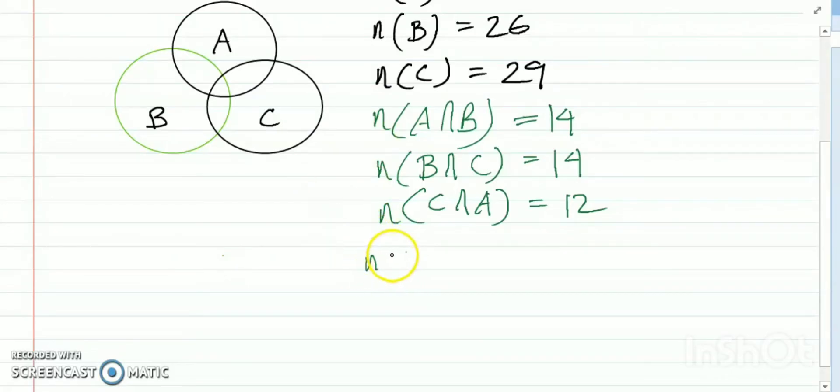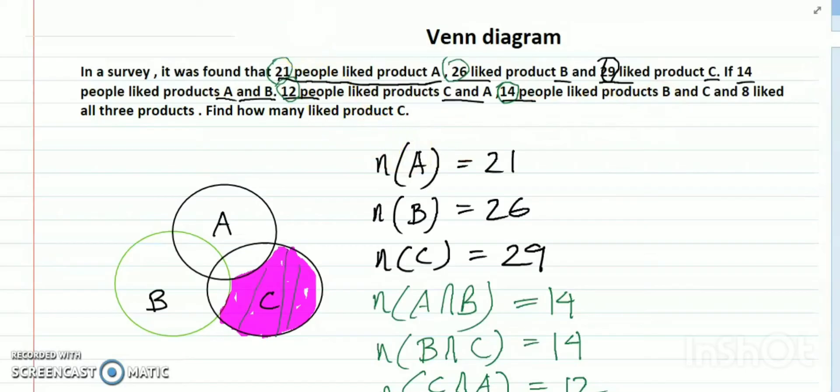Now I have to find out only this portion, only C. This region is my question - how many liked only product C?